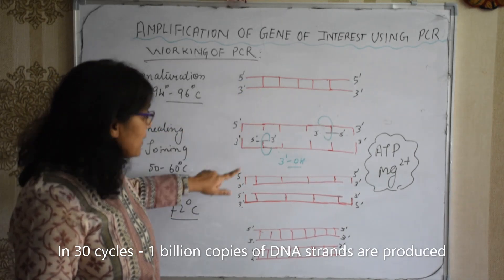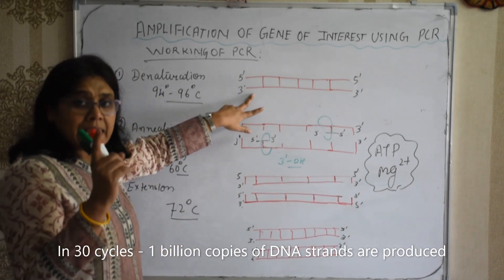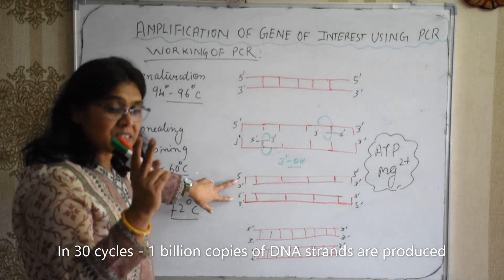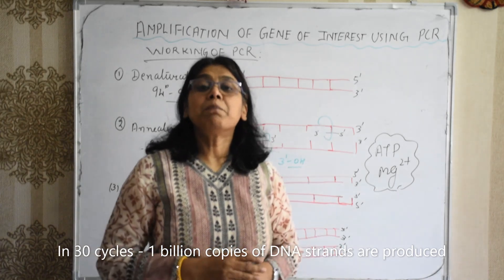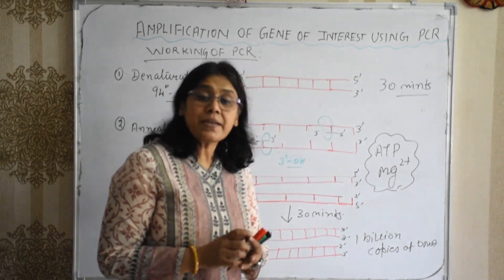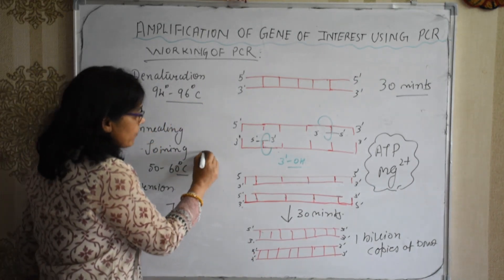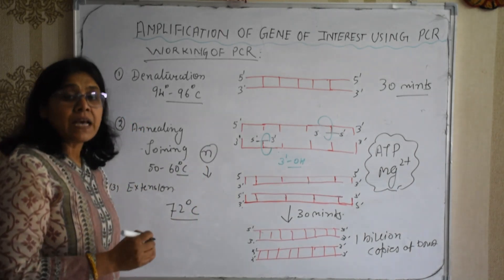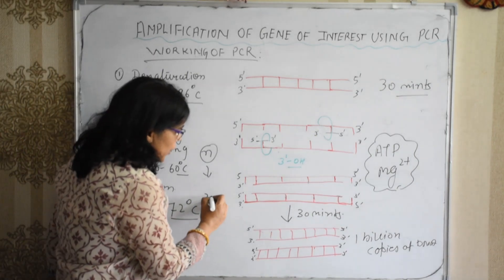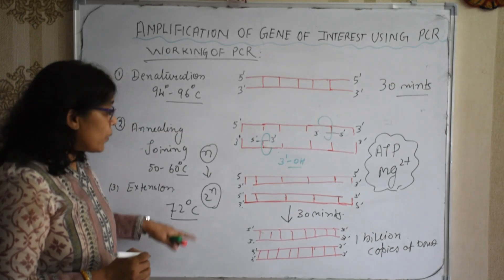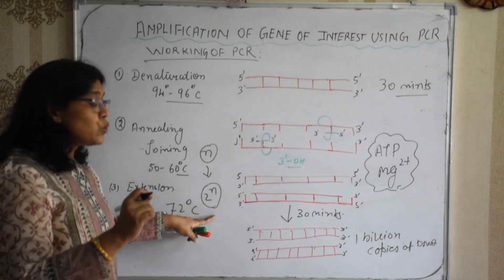By this process, new DNA strands are synthesized. From one single DNA duplex, two DNA duplexes are produced. This cycle is repeated several times and we get multiple copies of DNA. The formula is: if the cycle is repeated N times, the number of copies generated by PCR equals 2 to the power N.